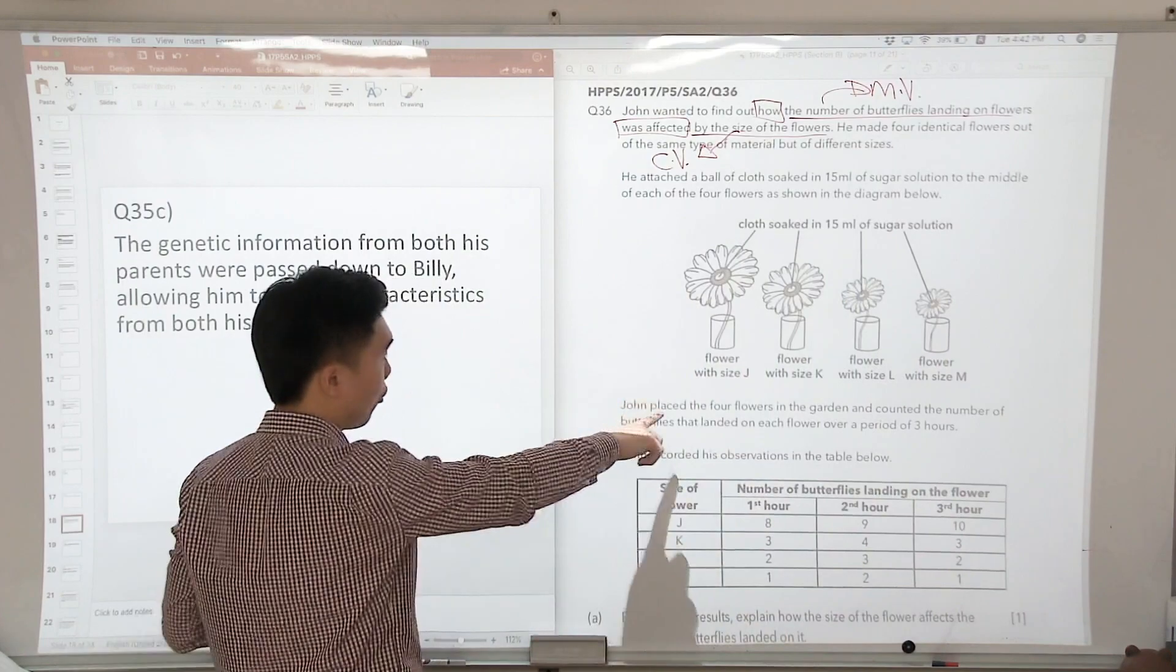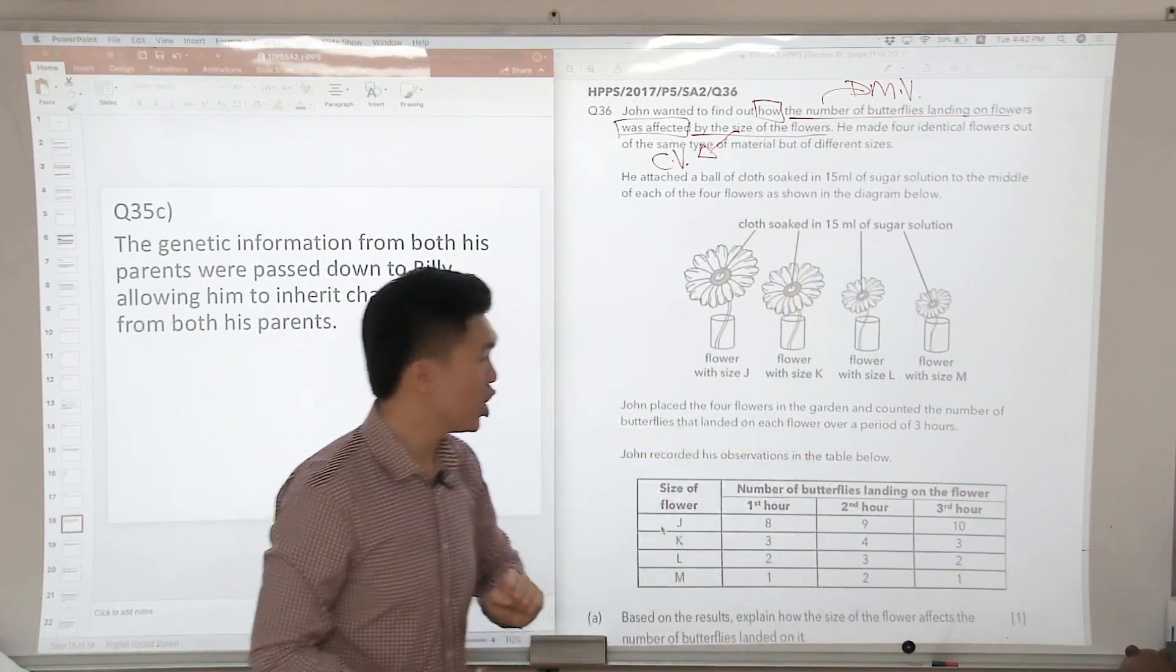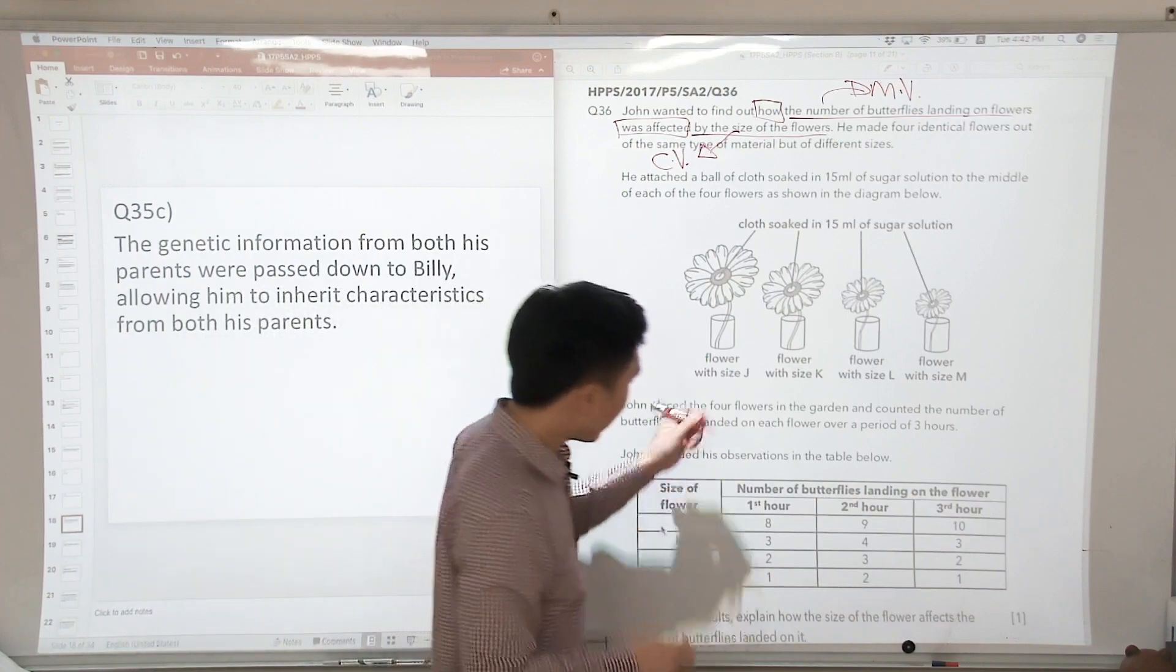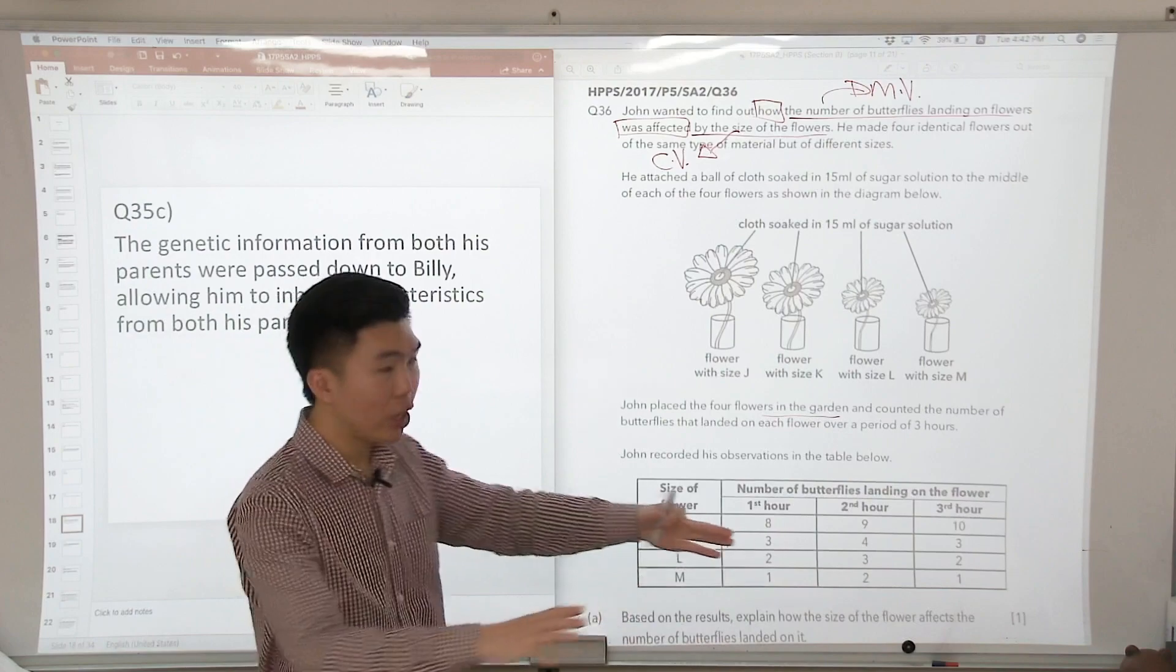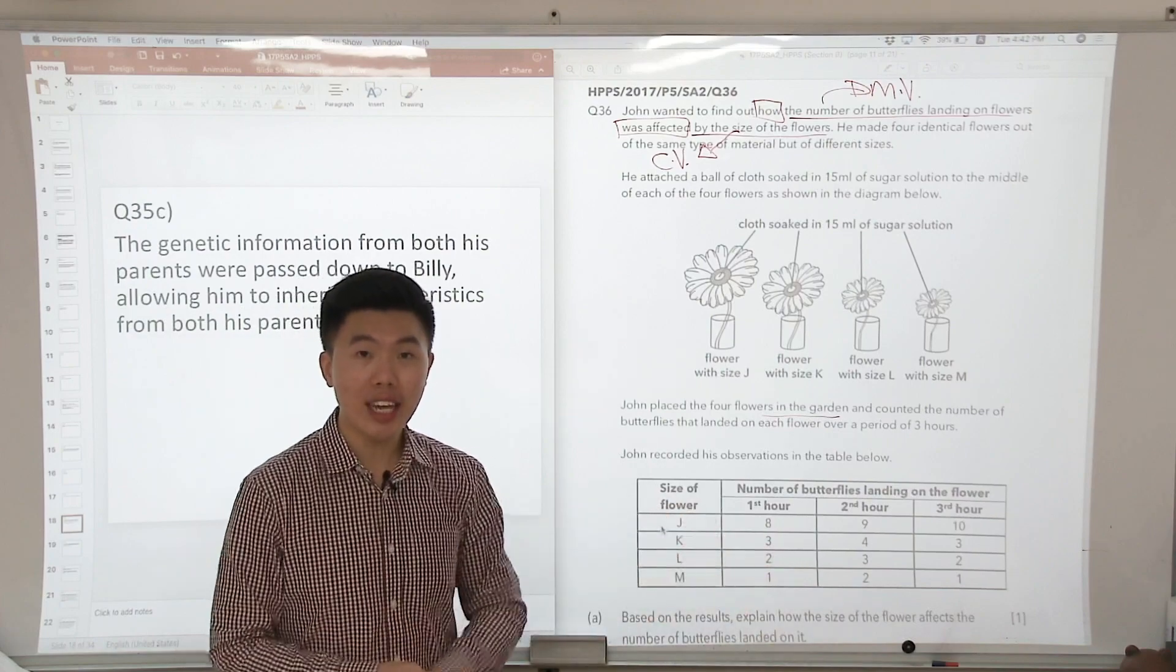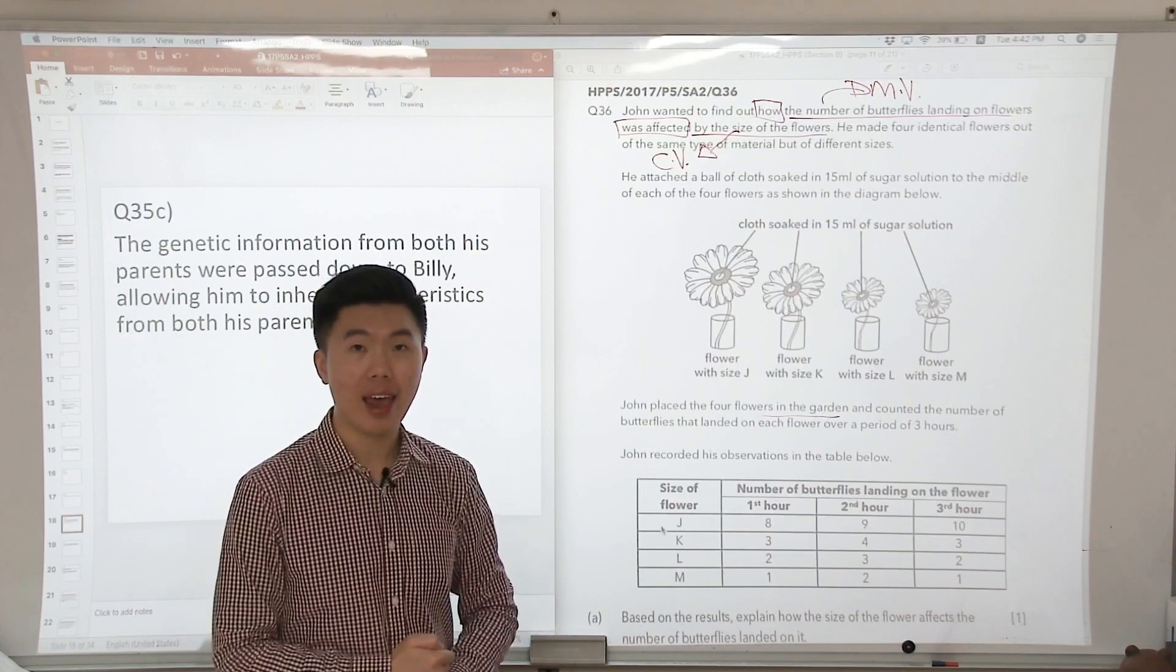So John then placed the four flowers in the garden and counted the number of butterflies that landed on each flower. So why did they specify the garden? Because this is to ensure that the location was kept the same so that there's only one change variable, and this helps to ensure a fair test.